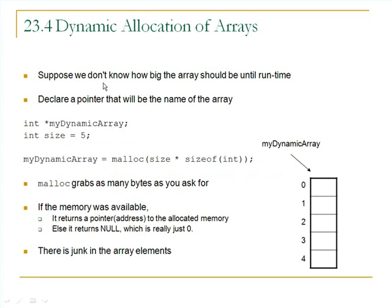When we were using arrays up until now, when we declared an array, we had to specify how many elements it has — a constant inside the square brackets. That's really inconvenient if you don't know how big the array should be until the program is running. So now we're going to declare a pointer variable, which will be the name of our dynamic array — I've called this one myDynamicArray — and we've said the size will be five elements. Here's the function call to go out and get a block of memory: it's malloc, and we pass one argument.